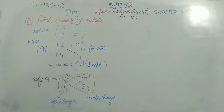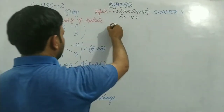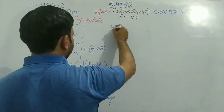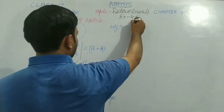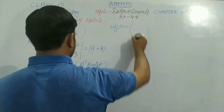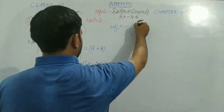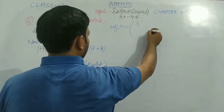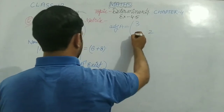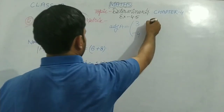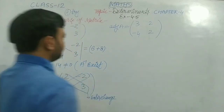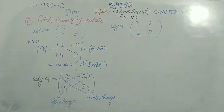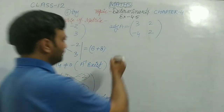So we can write adjoint of A equals the matrix: 3, 2 and negative 4, 2. This is the adjoint of A. Now, what is the formula for A inverse?